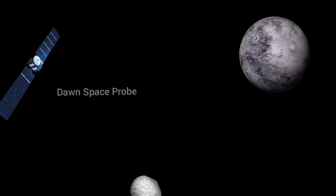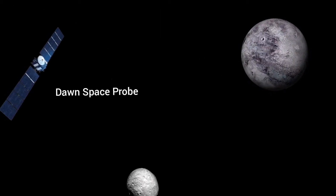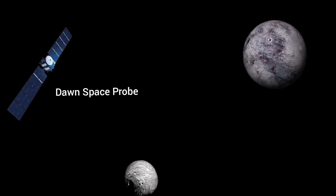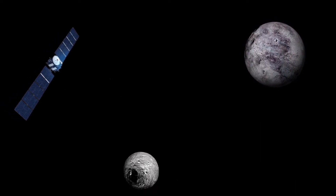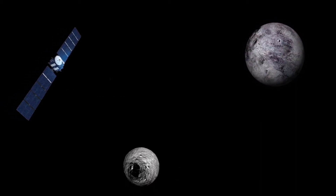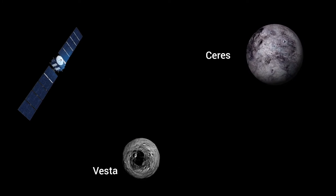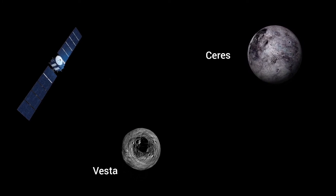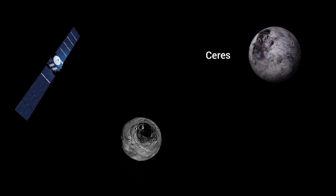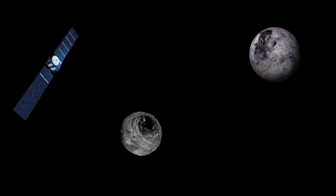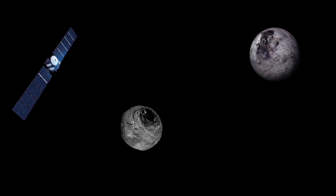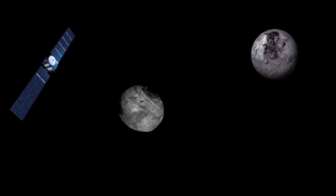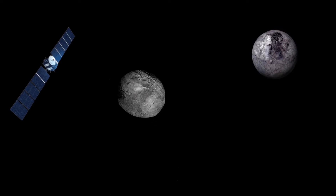The Dawn space probe was launched by NASA in September 2007, with the mission of studying two major objects of the asteroid belt: Vesta and Ceres. Dawn already orbited the protoplanet Vesta and is now in orbit around the dwarf planet Ceres.